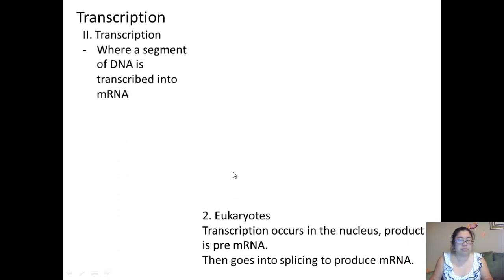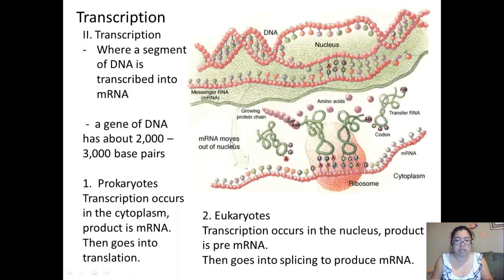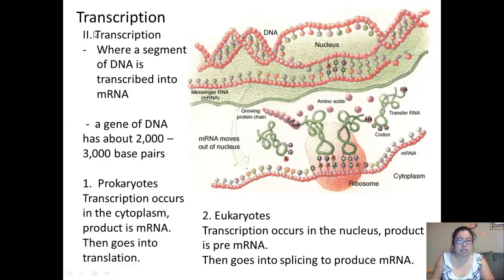Now we're going to start talking about where transcription actually happens. This is where a segment of DNA is transcribed into mRNA. The DNA will unwind and separate, make the messenger RNA, go through a splicing process, come out of the nucleus, go into the cytoplasm, and that's where translation happens. So transcription is basically: your body needs a certain protein, and you take a gene to make it — for example, insulin.